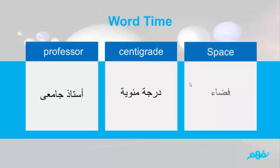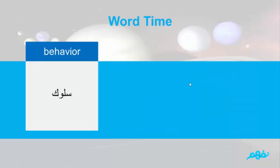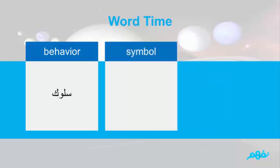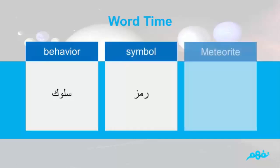Space — فضاء. Behavior — سلوك. Symbol — رمز. Meteorite — نيزك. And now let's go to the grammar part.